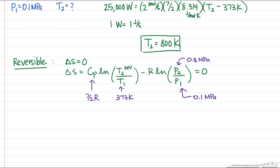The only thing we don't know is the T2 reversible, so what the outlet temperature would be for a reversible compressor. And we can solve this equation to determine that and find that it's equal to 676 Kelvin.